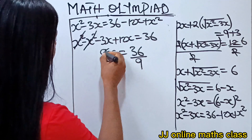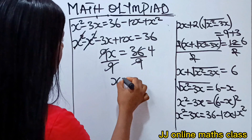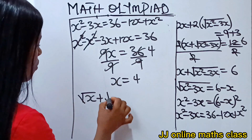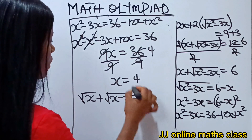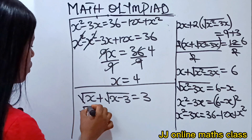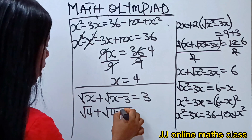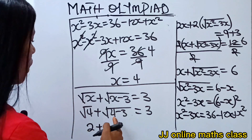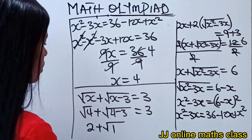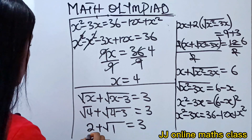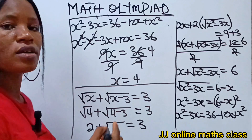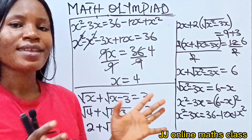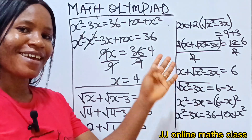Let's verify: the equation says √x + √(x − 3) = 3. Substituting x = 4: √4 + √(4 − 3) = 2 + √1 = 2 + 1 = 3. That checks out and proves the solution. Thank you so much for watching, and do have a lovely day!